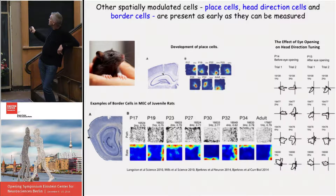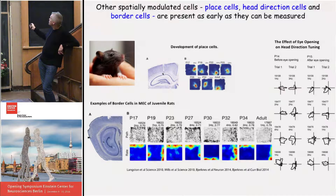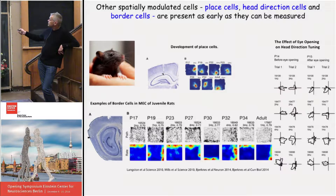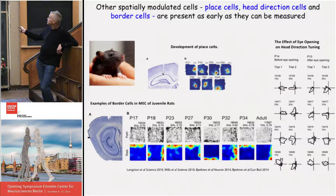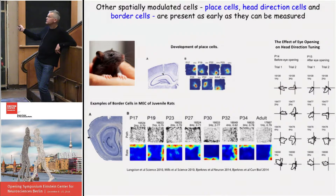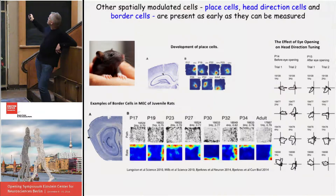The same goes for border cells, which fire along specific local borders of the environment. In adults you can see cells firing along the east wall, with more spikes there than elsewhere. The same is the case at all earlier stages, down to P17, which was the first day animals could be tested, and there's really no detectable difference in the properties of these cells.